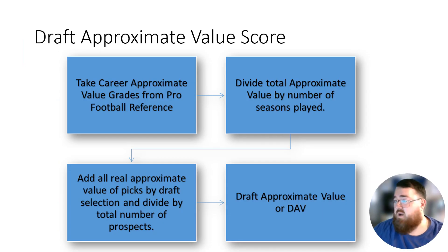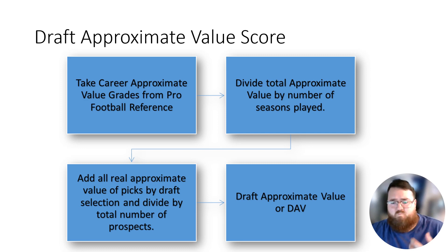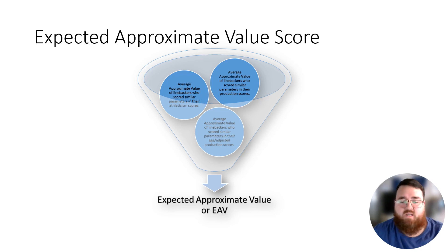What are we basing it on? We're looking at draft approximate value. Draft approximate value is the mean AV, or approximate value score, of prospects taken at their selection. For example, say you had a player at pick 16 — draft approximate value looks at what was the average NFL production score of a player taken at pick 16. Then you look at expected approximate value score, which is the data score. This one takes into account athleticism data, production data, age, adjusted production traits like strength of schedule, strength of team, physical metrics like arm length and hand size — it boils all of that down into one number.